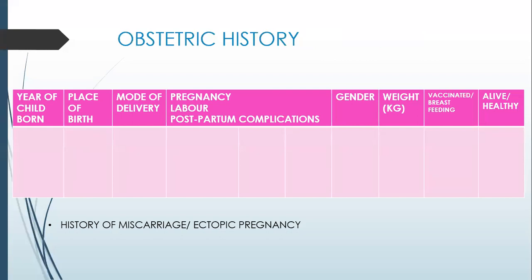In the Ops history, quickly make a chart so you do not miss any single step. Ask about the year the child was born, place of birth, mode of delivery — whether caesarean, spontaneous, or induced — any complications associated with the pregnancy, labor, intrapartum or postpartum, gender and weight of the baby, whether she fully vaccinated and breastfed her child, whether the baby is alive and healthy, and any comorbidities or problems associated with that child.